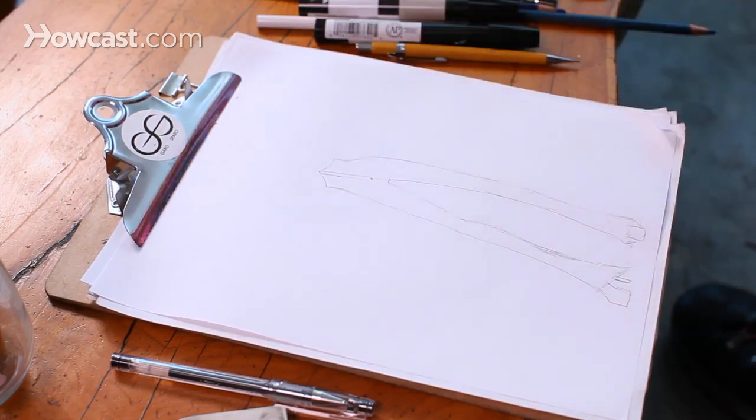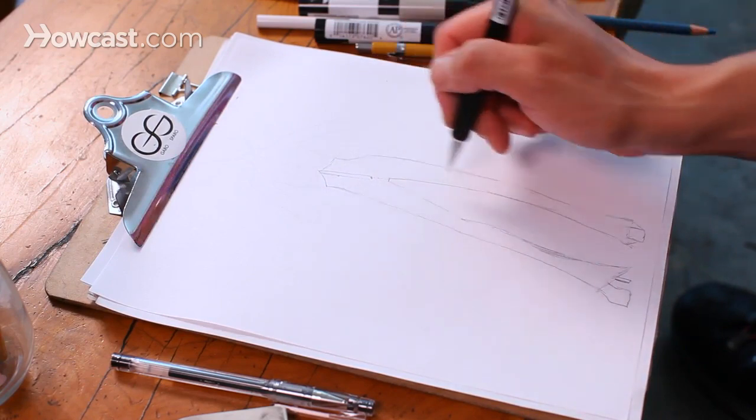You then create another dotted line to show where that seam will end. And you also have to think about pockets.